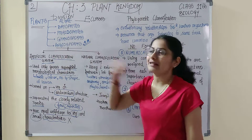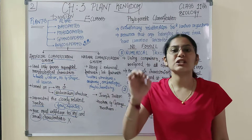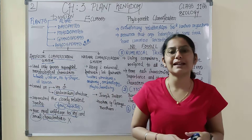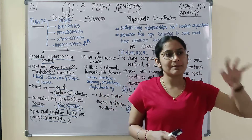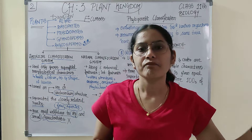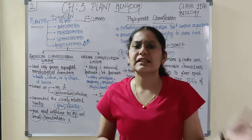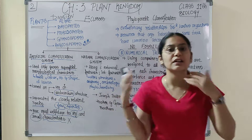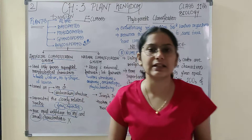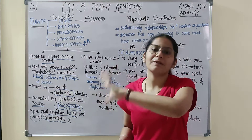To summarize, you have to remember that the artificial classification system is based on gross superficial morphological characters. This is important and can be asked in MCQs. These characters include habit, color, number and shape of leaves — one kind of vegetative character — as well as external morphological characters. They are also based on the number or structure of the androecium, the male part, bringing in sexual characteristics.